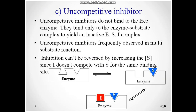The next type is uncompetitive inhibitors. Uncompetitive inhibitors do not bind to the free enzyme; they bind only to the enzyme-substrate complex, yielding an inactive enzyme-substrate-inhibitor complex. Uncompetitive inhibition is frequently observed in multi-substrate reactions. Inhibition cannot be reversed by increasing the substrate concentration, since the inhibitor does not compete with the substrate for the same binding site. The inhibitor and substrate bind to their respective binding sites, forming an ESI complex.